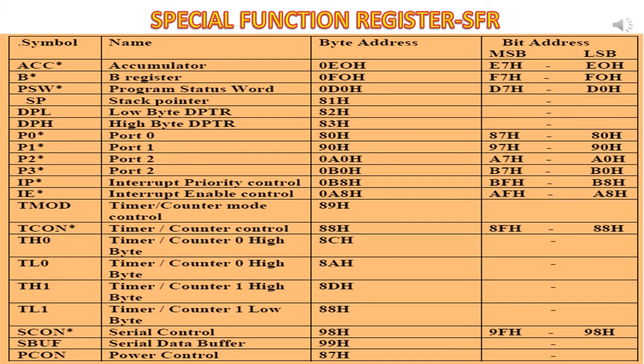These special function registers are used to perform certain special functions. Each and every register performs certain special functions. Each one has its own name and address. Among the 21 special function registers, 11 special function registers can be accessed in two ways — in a byte or bit addressable manner. Their bit and byte addresses are given in the tabulation and are represented with a special symbol.